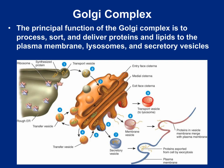Our next organelle is the Golgi complex, or Golgi apparatus. Its principal function is to process, sort, and deliver proteins and lipids to the plasma membrane and elsewhere within the cell. I like to think of the Golgi apparatus as the FedEx of the cell — it's responsible for packaging and shipping. Substances made by the rough or smooth ER will bud off those organelles and travel to the Golgi complex via vesicles.